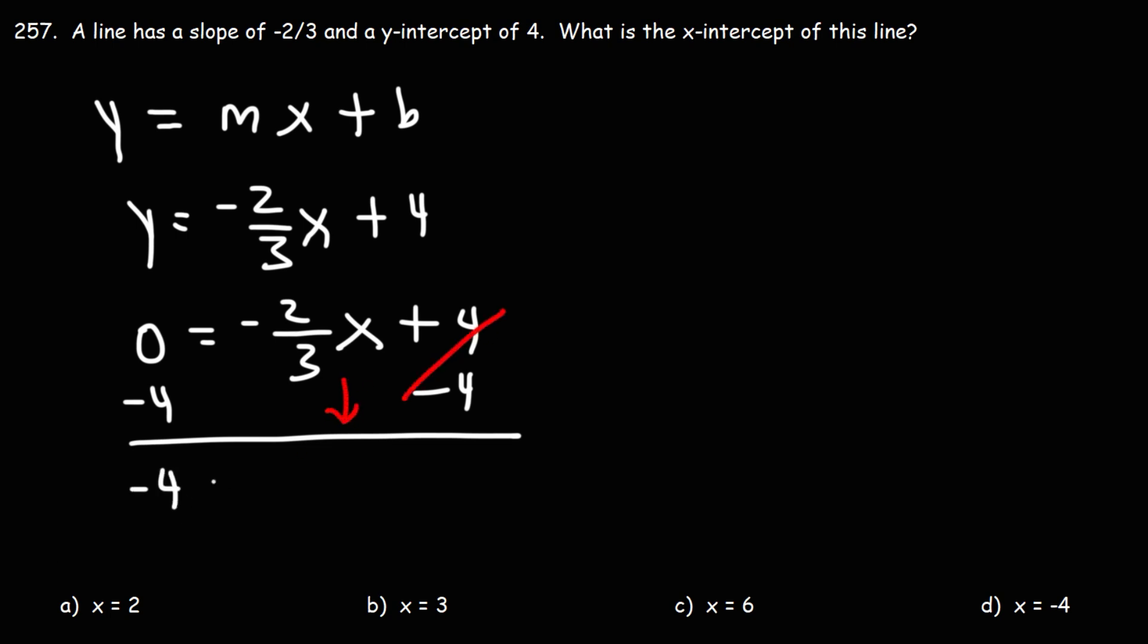So we'll get negative 4 is equal to negative 2 over 3x. Next I'm going to multiply both sides by 3. This will get rid of the denominator on the right.